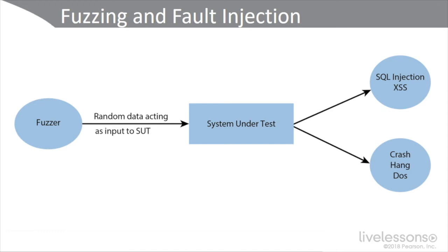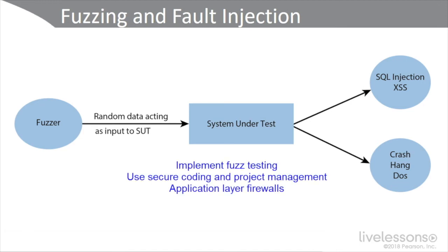Fuzzers can perform SQL injection, cross-site scripting, force a crash, a hang, or a denial of service. The three primary methods to prevent these attacks are: implement fuzz testing to find weaknesses, use secure coding and project management principles, and consider deploying application-layer firewalls — a next-generation firewall from Cisco, Barracuda, or Palo Alto Networks — or an appliance like the Cisco Web Security Appliance or Cisco Cloud Web Services.